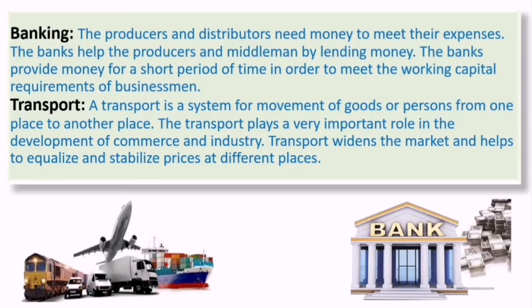The first aid to trade is banking. Producers and distributors need money to meet their daily business needs. Banks help producers and middlemen by lending money for a shorter period, a longer period, or an interim period. Banks provide money for a short period of time in order to meet the working capital requirements of a businessman, and also give financial assistance during leisure periods.